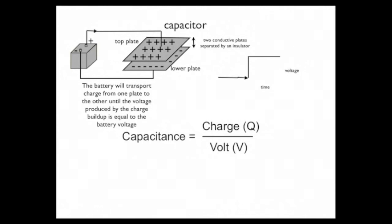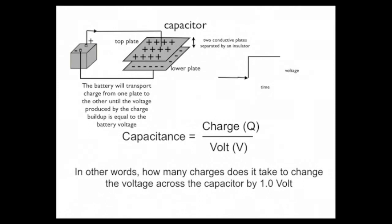The capacitance, by definition, is equal to the charge per volt. In other words, how many charges does it take to change the voltage across the capacitor by 1.0 volts? We won't be considering 1 volt, we'll be considering millivolts.